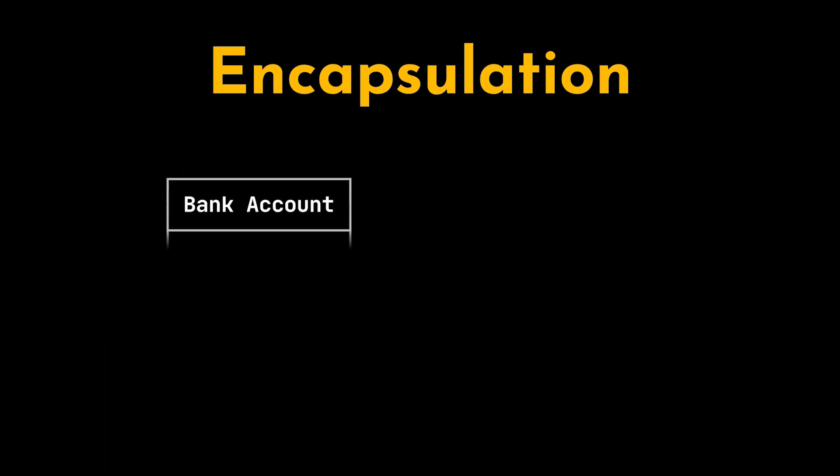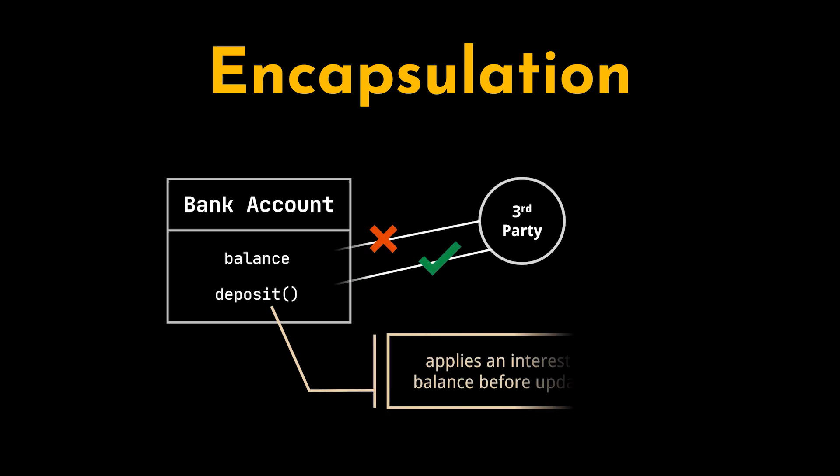Let's suppose we have a bank account class with a balance attribute and a deposit method. We don't want any external source to access the balance attribute and change it without going through the deposit method, because in this method we are applying an interest rate or we are applying some currency conversion factors before actually updating this value.